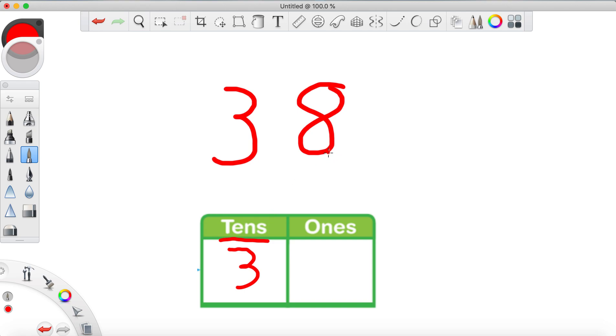It is the 3. So, in this box where it says tens, I can write the 3. And that means that the 8 is in the ones place. And I'll write that in the box right here. Oh, that's not a very pretty 8. Let me make a prettier one. There we go. It's better.